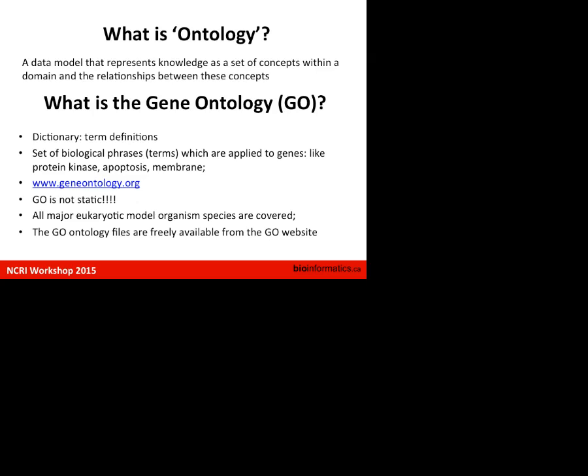What is ontology in general? Ontology is a data model that represents knowledge as a set of concepts. For example, what is a berry? A berry is a strawberry, blueberry, blackberry, and so on. But at the same time, a berry is food, and a berry is a plant. You can create a very complicated set of terms this way.